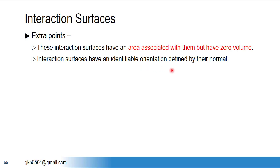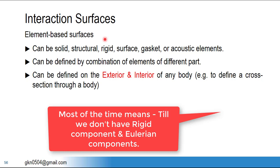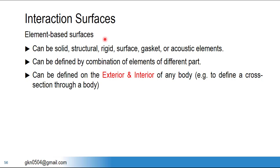Contact surfaces have a specific orientation — that is the contact surface normal. There must be a normal direction on the contact surfaces; otherwise loads and boundary conditions cannot be calculated on the interaction surface. Basically we have four types of interaction surfaces: element-based, node-based, analytical rigid, and Eulerian surfaces. The two most commonly needed are element-based and node-based surfaces.